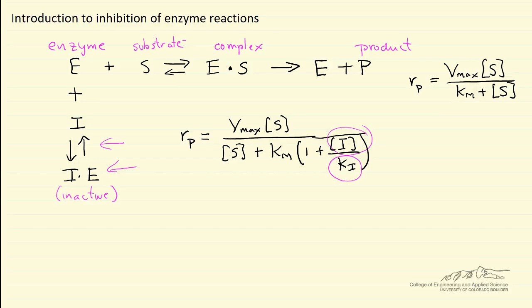The idea is if we have an inhibitor present, then it's going to decrease the rate of the enzyme reaction to make product. In this case, we're looking at competitive inhibition.